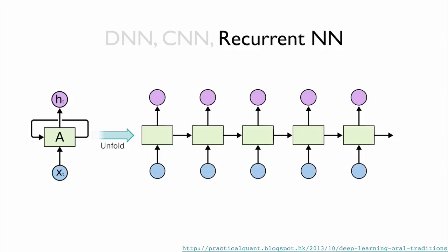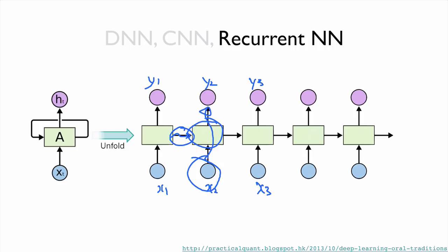Let's look at it in the unfolded view. Each cell has input x1, x2, a series of inputs, and you can produce a series of outputs. The first cell's output will be passed through to the next cell's input. In that cell, the input is the previous state and this new input, and it will produce the output.